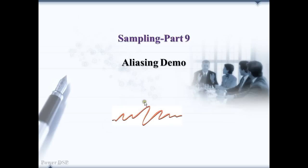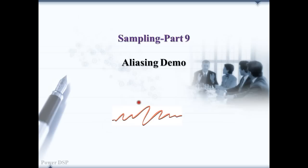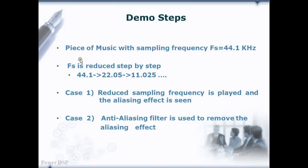In fact, we have been talking about aliasing and its effects on the signal and spectrum. Now, it is time to see how the aliasing sounds. What I am gonna do here is to take a piece of music which is having the sampling frequency of 44.1 kHz. Then, I am going to reduce the sampling frequency step by step. For example, from 44.1 kHz to 22.05 kHz, then 11.025 kHz and so forth.